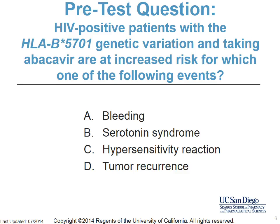HIV-positive patients with the HLA-B*5701 genetic variation and taking abacavir are at increased risk for which of the following events? Options are: A, bleeding; B, serotonin syndrome; C, hypersensitivity reaction; or D, tumor recurrence.